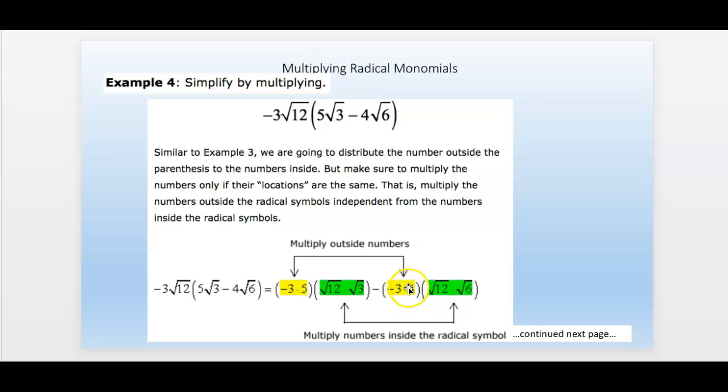Then negative 3 times the 4, right here, and you multiply the numbers inside together. So 12 times 3 inside the radical, 12 times 6 inside the radical for the second term.